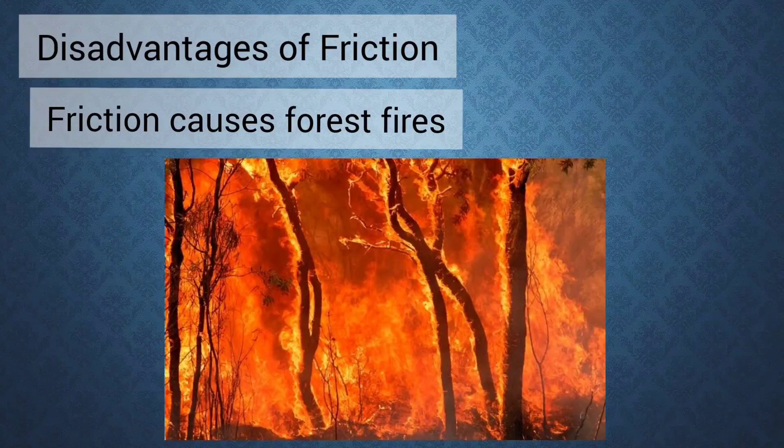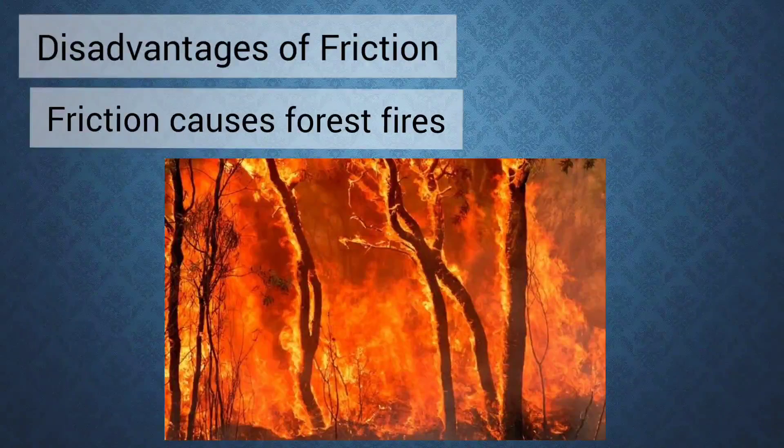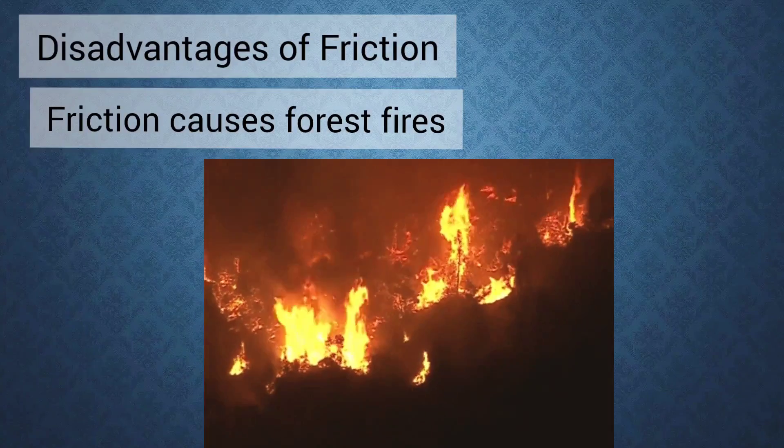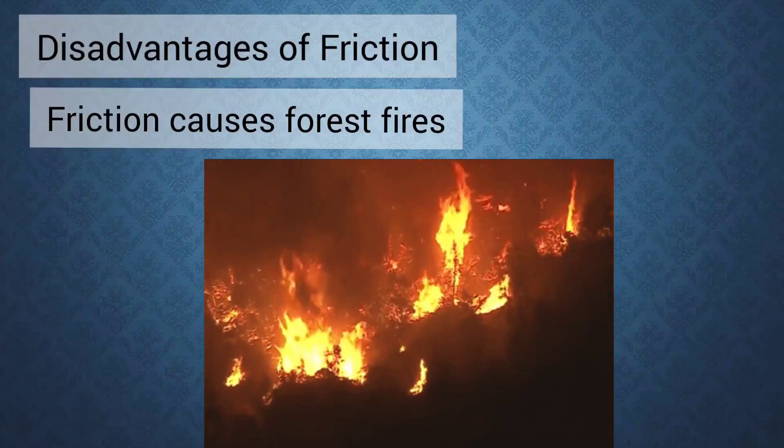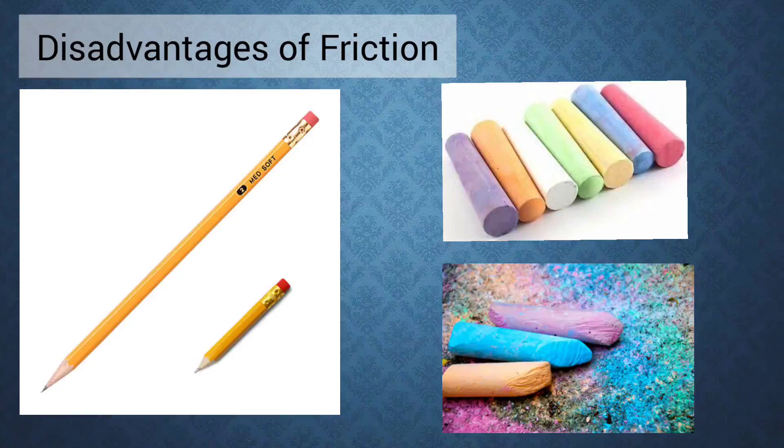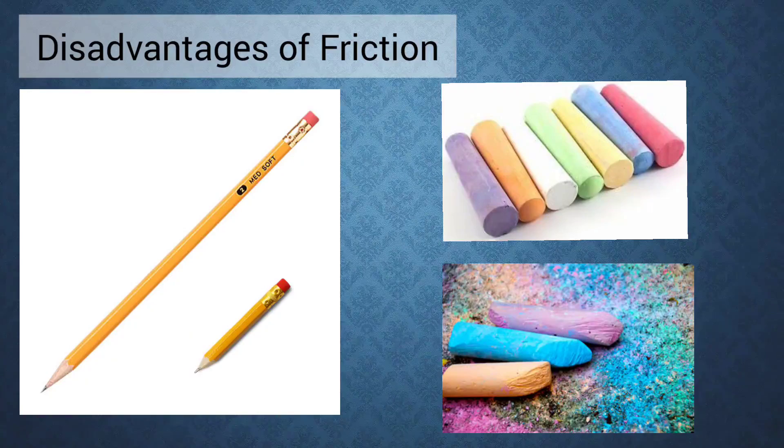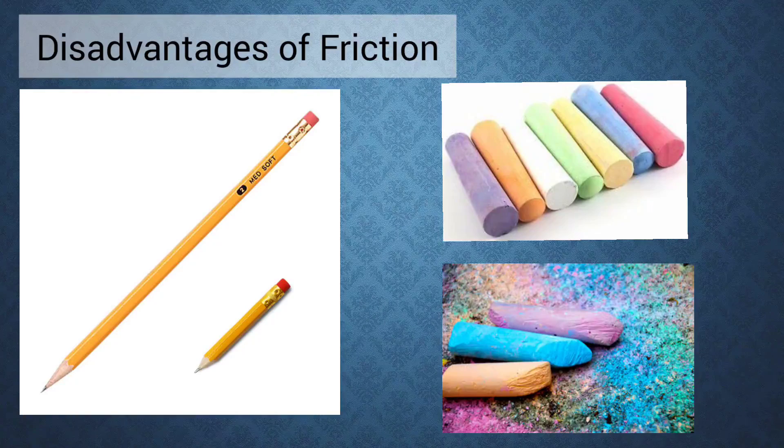Forest fires occur due to the friction between branches of trees which rub against each other. Understood?